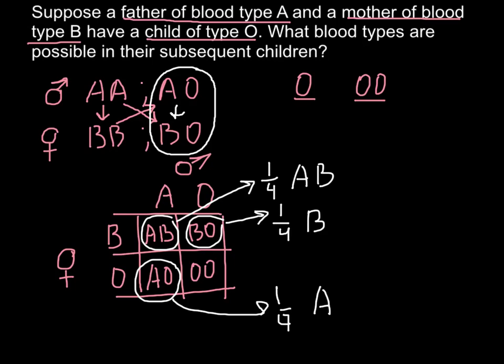And they would also have one-fourth chances for their children to be phenotype O.